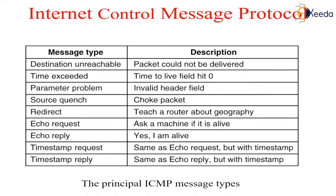The destination unreachable message is used when the subnet or a router cannot locate the destination. The time exceeded message is sent when a packet is dropped because its counter has reached zero — a symptom that packets are looping, that there is enormous congestion, or that the timer values are being set too low. The parameter problem message indicates that an illegal value has been detected in a header field. The source quench message was formerly used to throttle hosts that were sending too many packets; when a host received this message, it was expected to slow down.